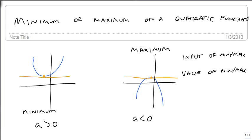If we ask for the input, this is always h. And if we ask for the value or the output, that's always k. But the same thing we did before for graphing and finding h and k is the same thing we do now to find the minimum or the maximum.